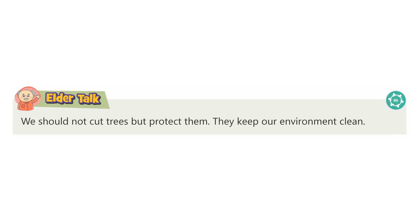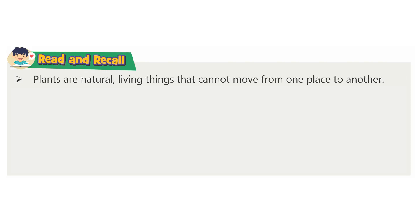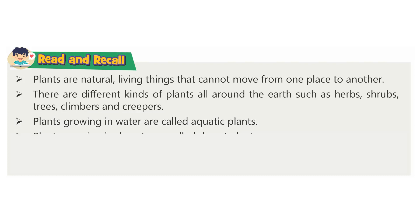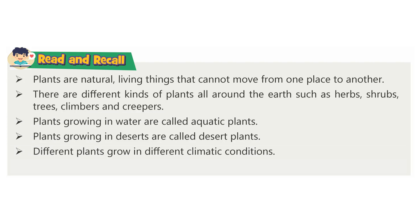Elder Talk: We should not cut trees but protect them. They keep our environment clean. Read and recall: Plants are natural, living things that cannot move from one place to another. There are different kinds of plants all around the earth such as herbs, shrubs, trees, climbers and creepers. Plants growing in water are called aquatic plants, and plants growing in deserts are called desert plants. Different plants grow in different climatic conditions. Plants are very useful for us.